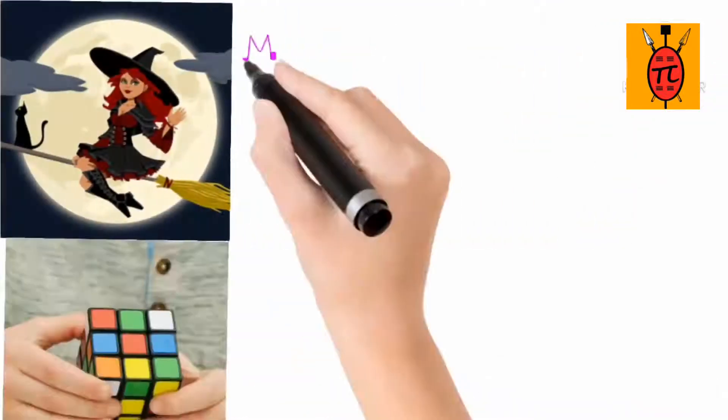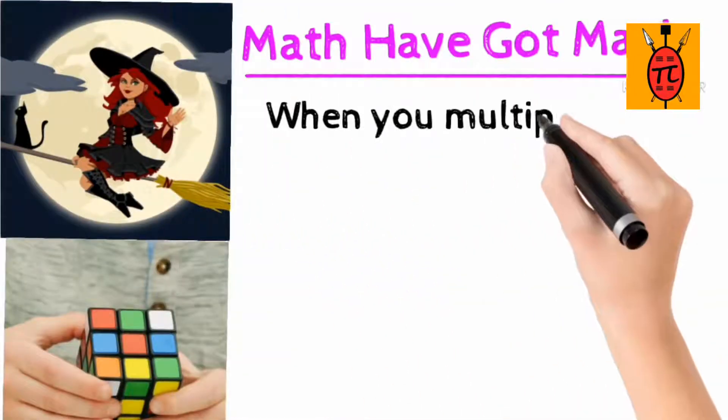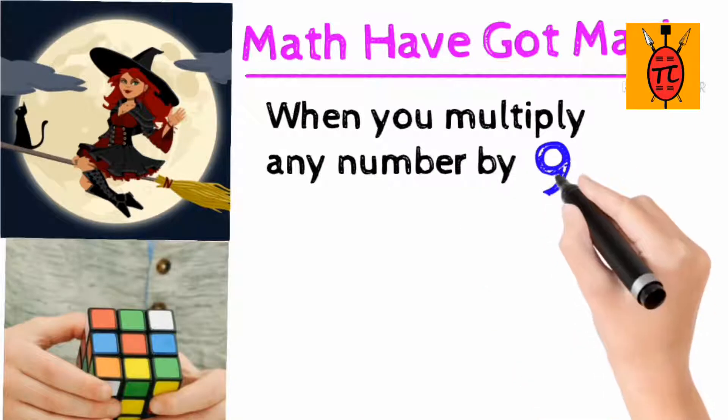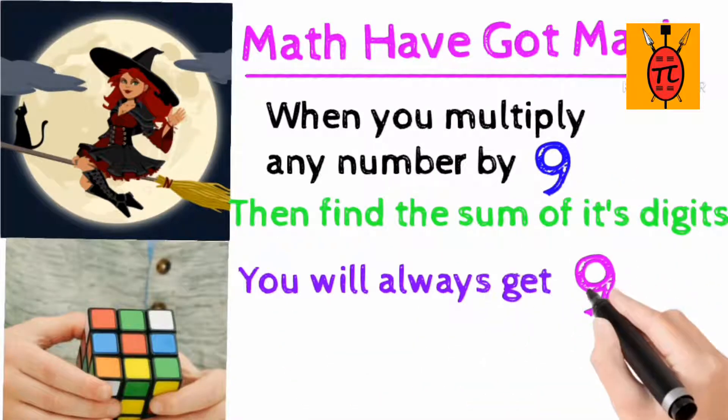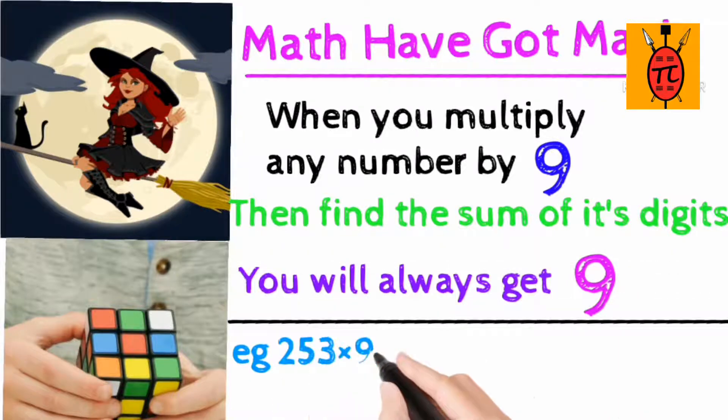Math have got magic. When you multiply any number by 9, then find the sum of its digits, you will always get nine. Would you like to give it a try? Yes, you can.